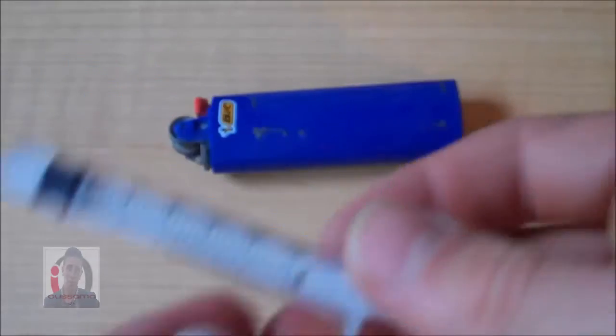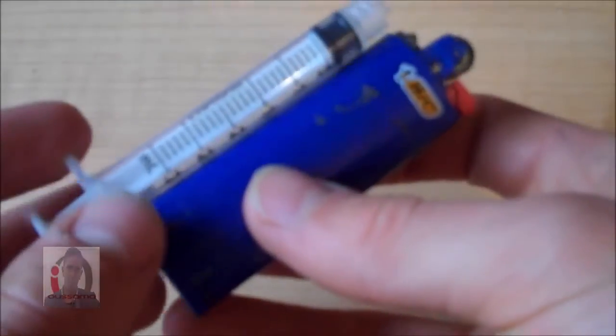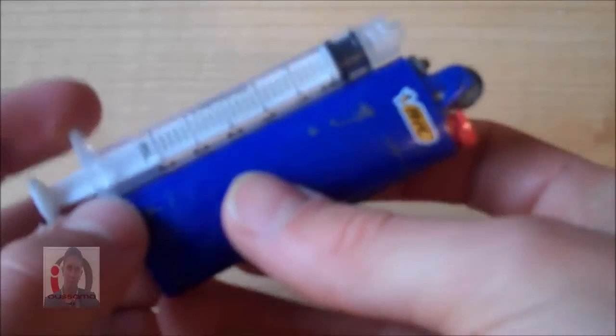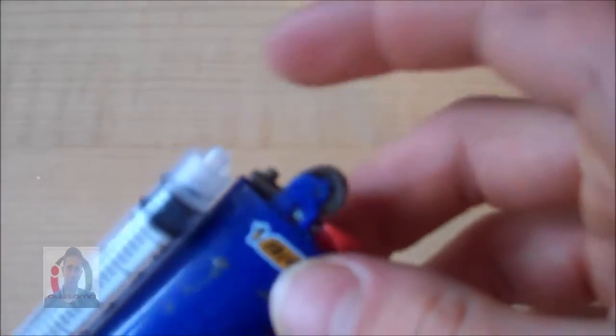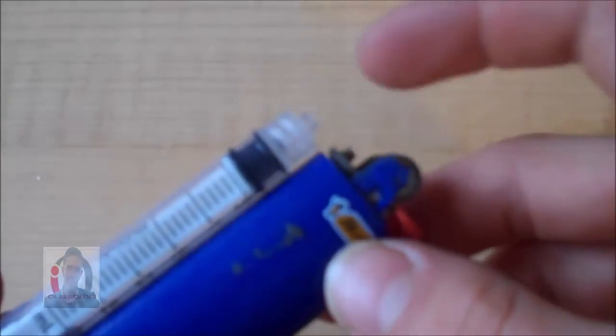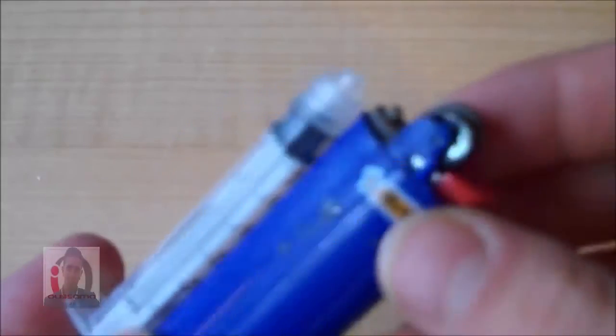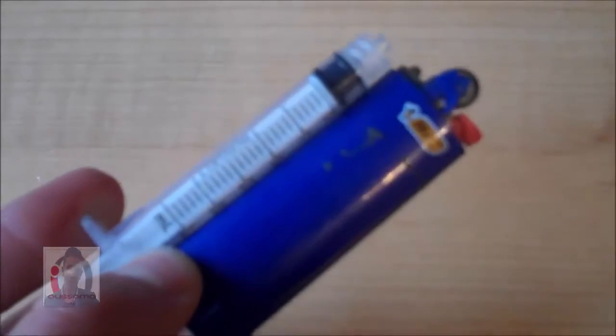So now what we have to do is mount it just like so on the top of your lighter, plunger at the back, and so the opening to the flame of your cigarette lighter is close to the nozzle as you see there. And we're going to use some hot glue gun for that.